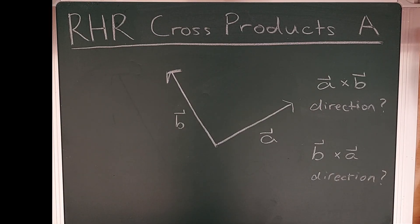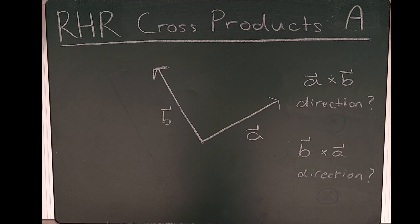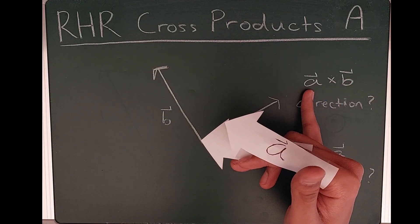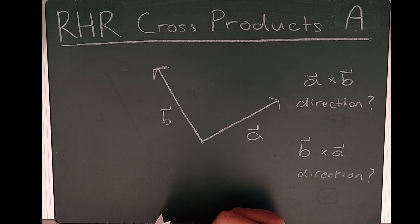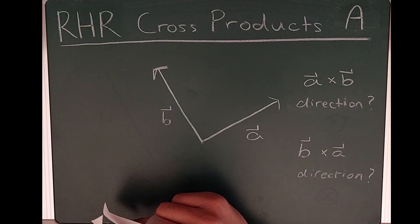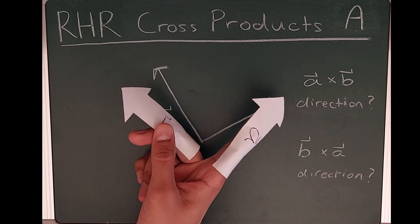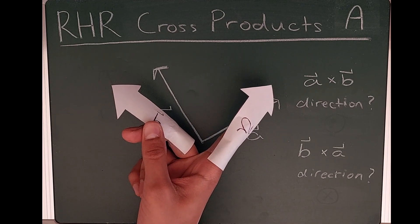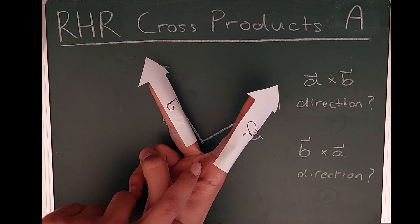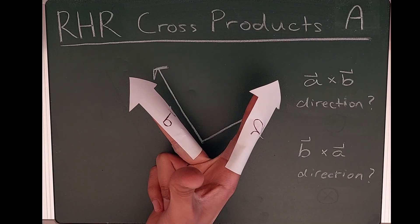The first right-hand rule is the most traditionally taught one. It involves your index finger, your middle finger, and your thumb. To determine the direction of A cross B, take your right hand — always your right hand — and point your index finger in the direction of the first vector A. Then take your middle finger and point it in the direction of the second vector B.